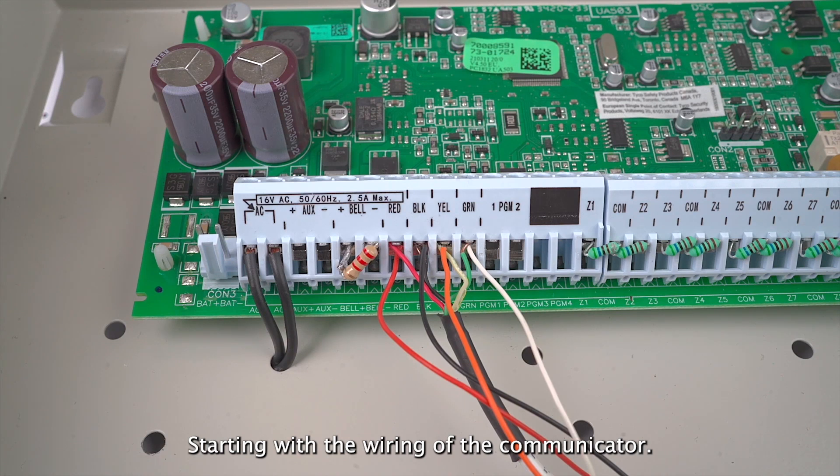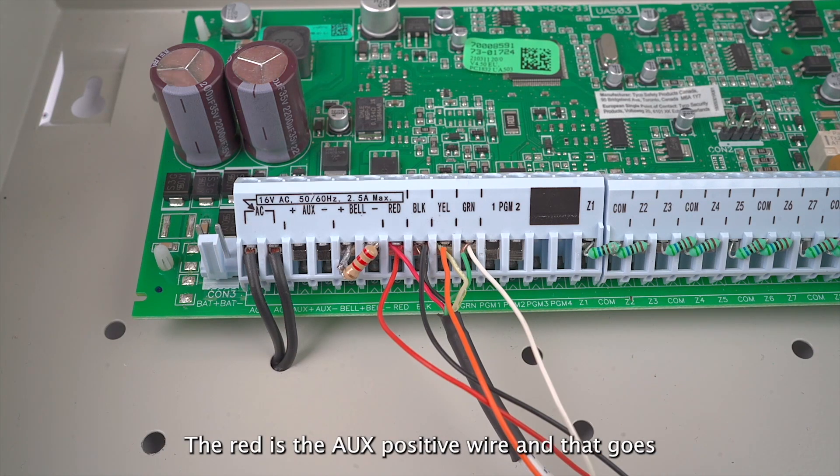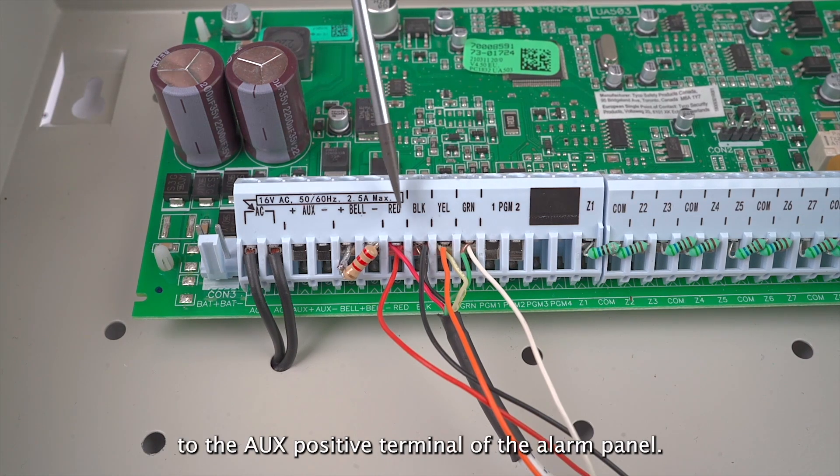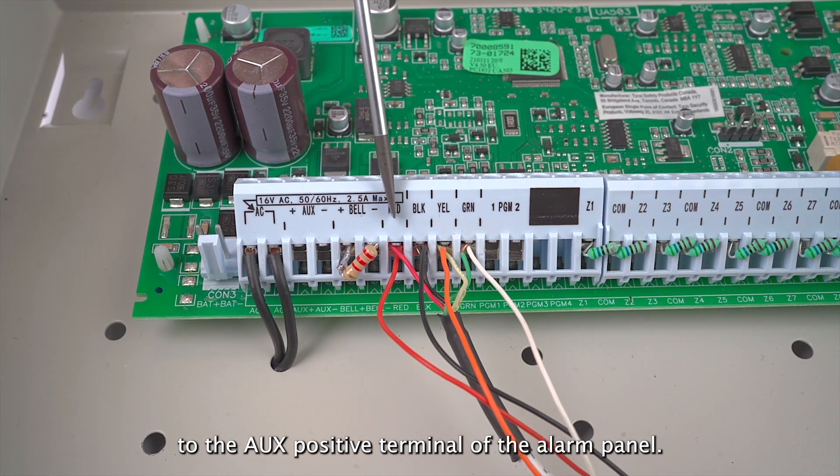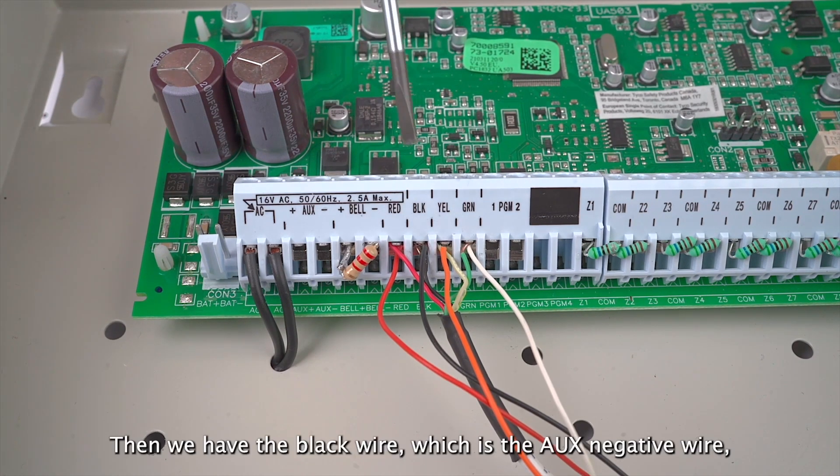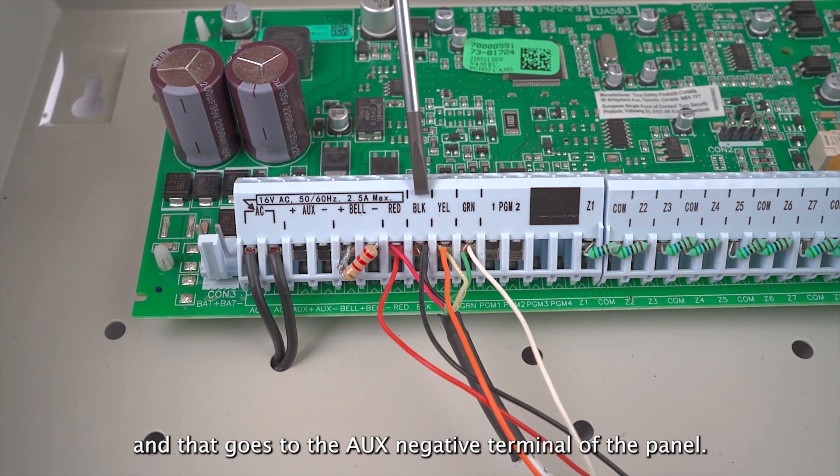Starting with the wiring of the communicator, we have the red and black wires of the radio. The red is the aux positive wire and that goes to the aux positive terminal of the alarm panel. Then we have the black wire, which is the aux negative wire, and that goes to the aux negative terminal of the panel.